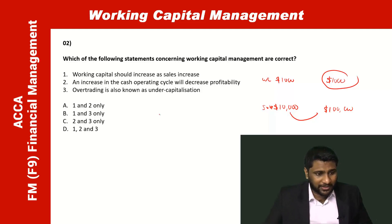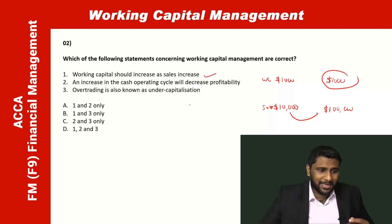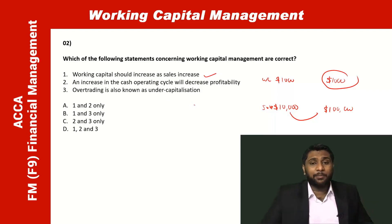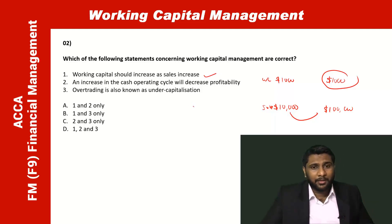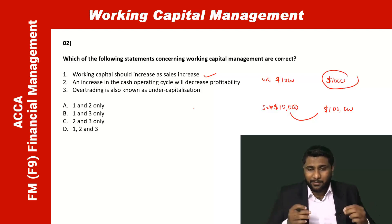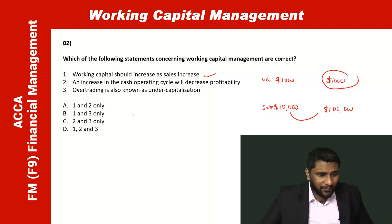So the first statement is correct: working capital should increase when sales increase. The second statement — increasing the cash operating cycle will decrease profitability — is also obviously correct.